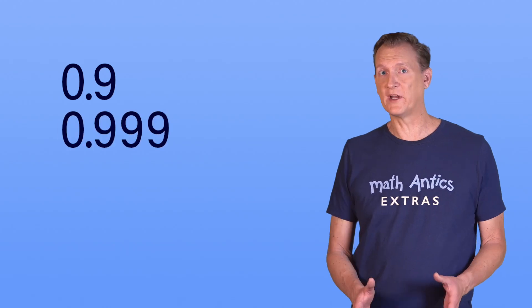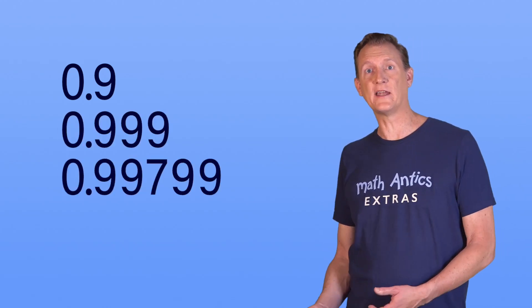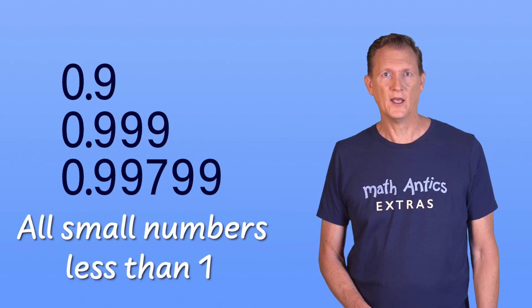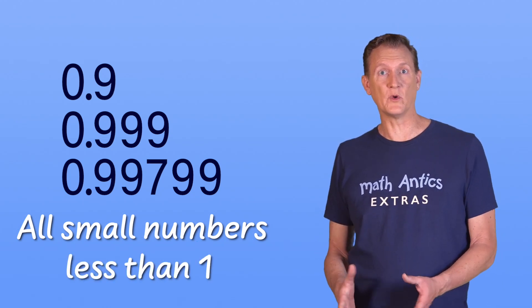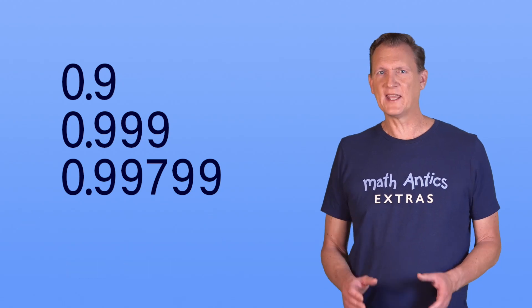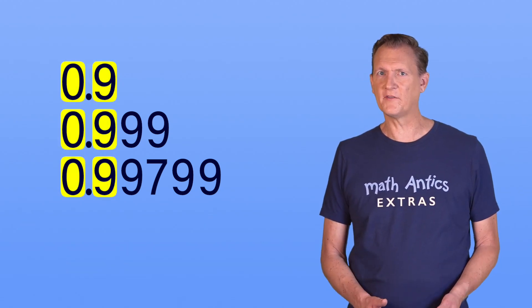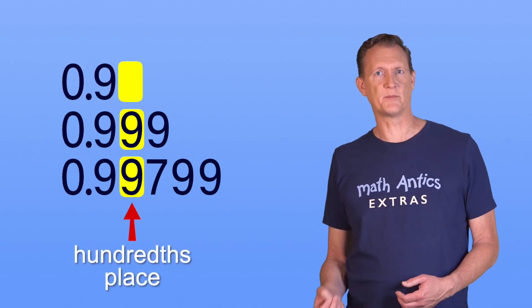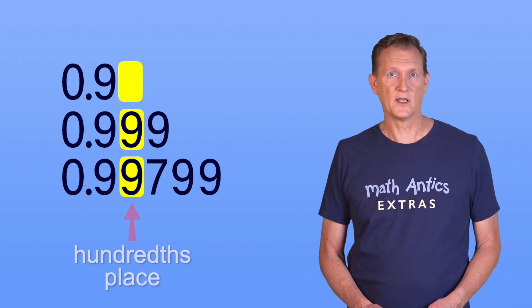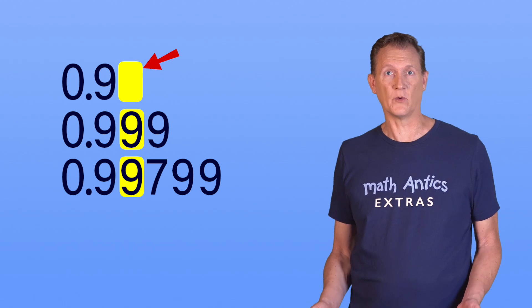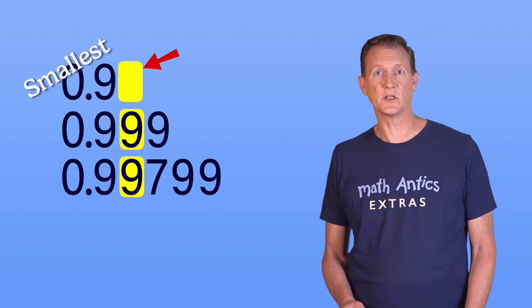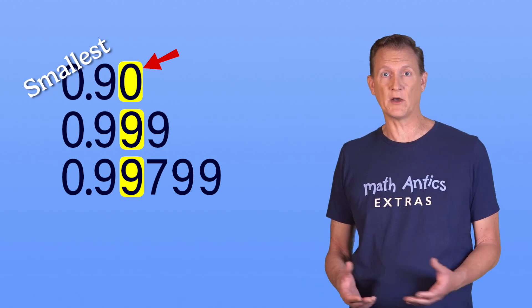0.9, 0.999, and 0.99799 are all small numbers. They're all less than 1. But which has the greatest value, and which has the smallest? Well we can't tell from the first two digits on the left, because they're the same for all three numbers. But when we get to the hundredths place, we do notice a difference. The first number doesn't have a digit there, while the others do. That means the first number is the smallest, because we could put a 0 in the hundredths place without changing its value.